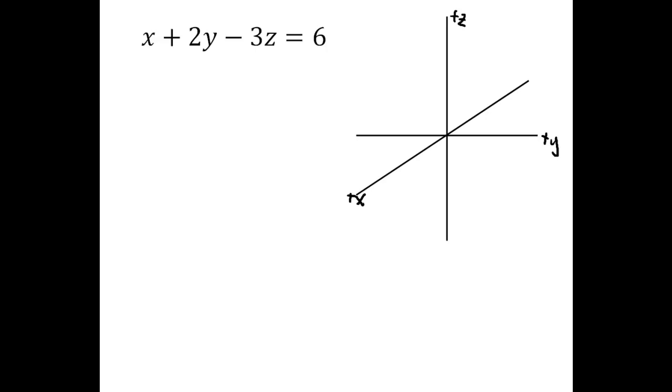So this is the standard form for the equation of a plane, ax plus by plus cz equals d, where a, b, c and d are constants. Since none of those constants are 0 in this case, we can graph this pretty easily by just finding the intercepts.